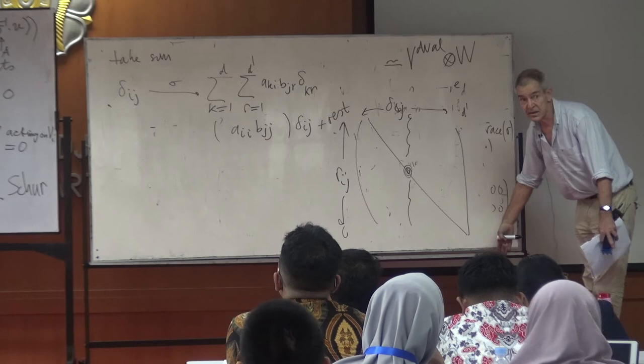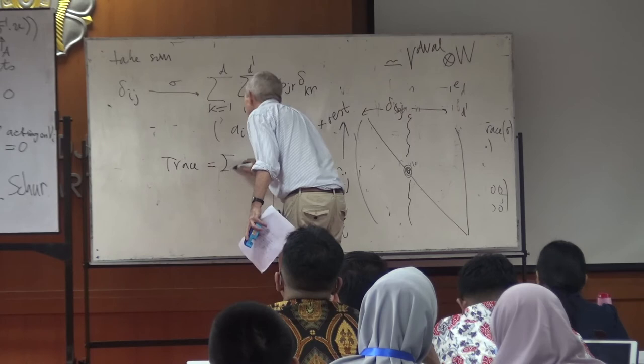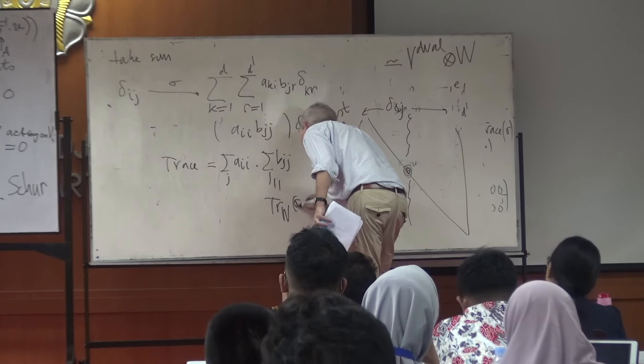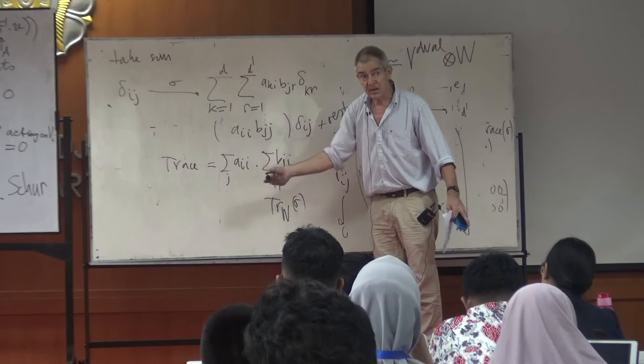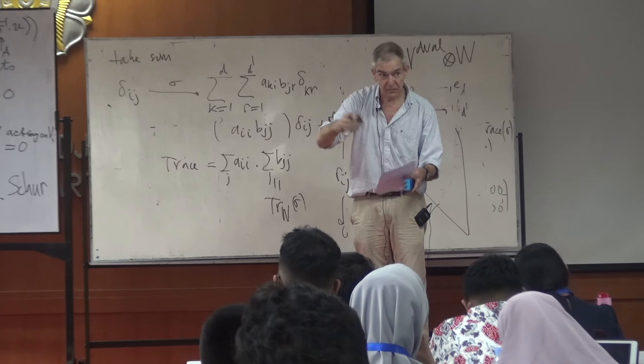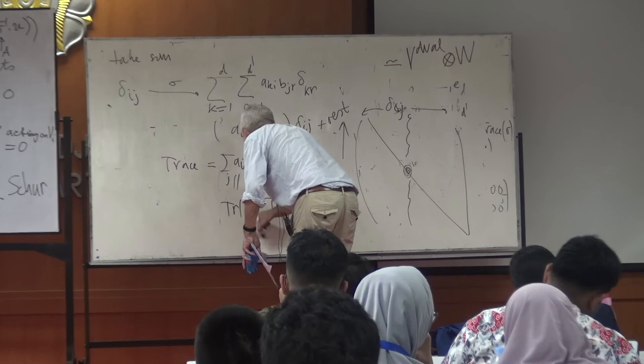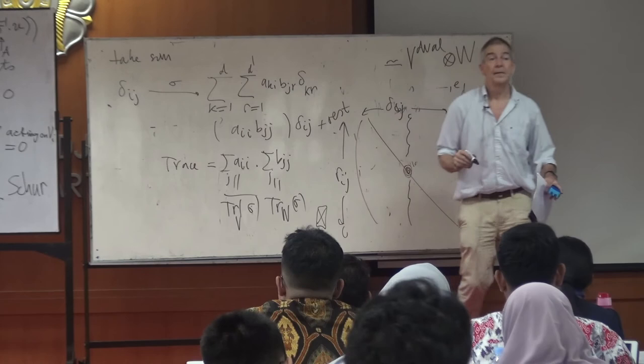This is precisely the trace of sigma on W times the trace of sigma-inverse on V. The trace of sigma-inverse is the complex conjugate of the trace of sigma on V, because the eigenvalues are inverses of roots of unity, and the inverse of a root of unity is its conjugate. So the character of Hom(V,W) at sigma equals the conjugate of chi_V(sigma) times chi_W(sigma). Now we are done. Learn tensor products.